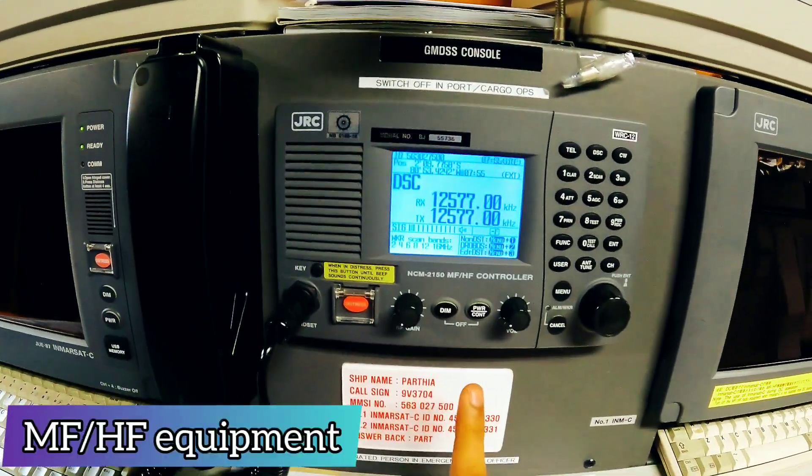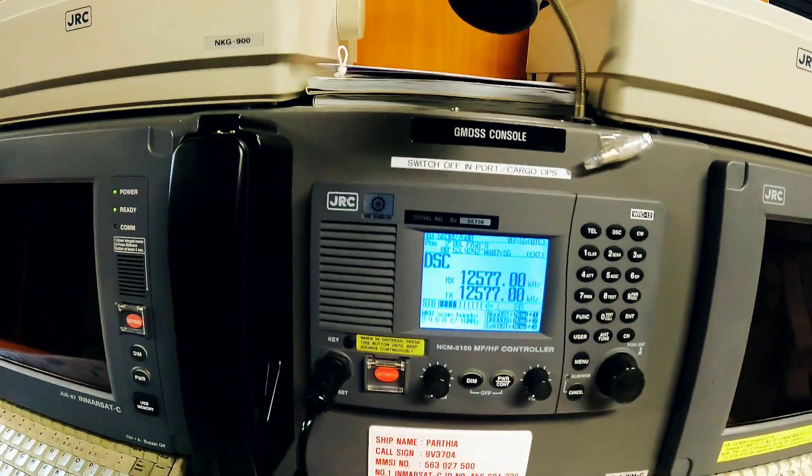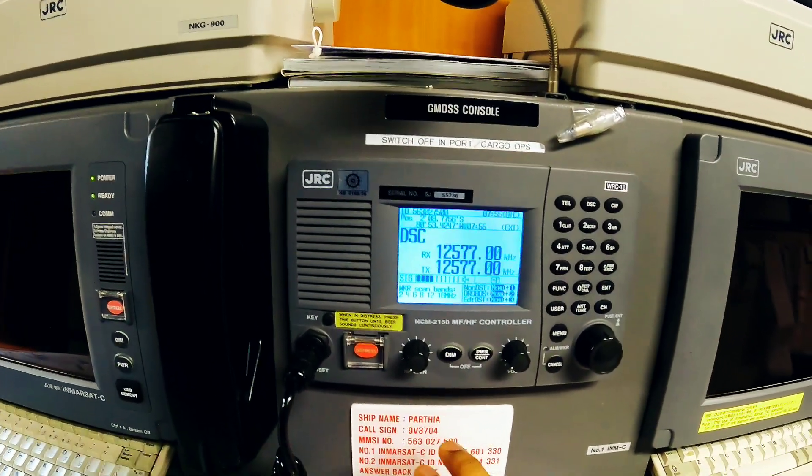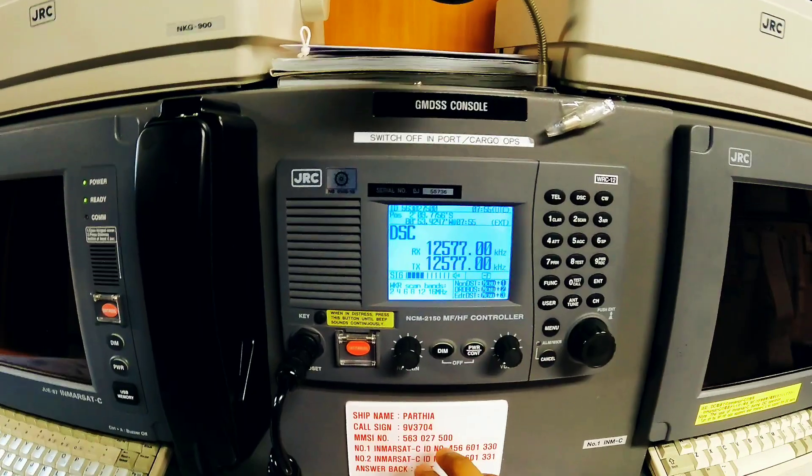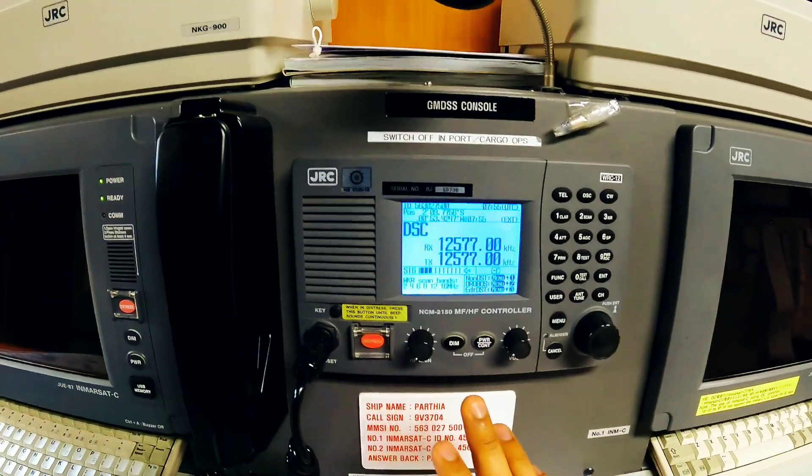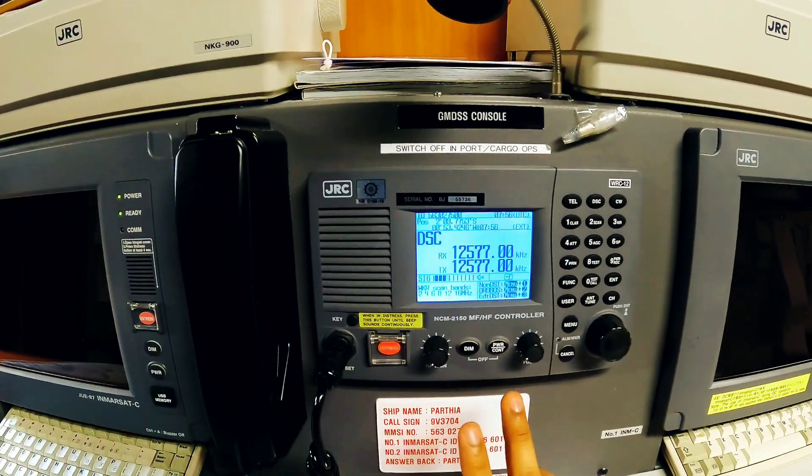This is the MFHF equipment which you can see here. For sending distress messages by using MFHF equipment, the procedure is almost similar to the VHF equipment. There are two types of distress messages.